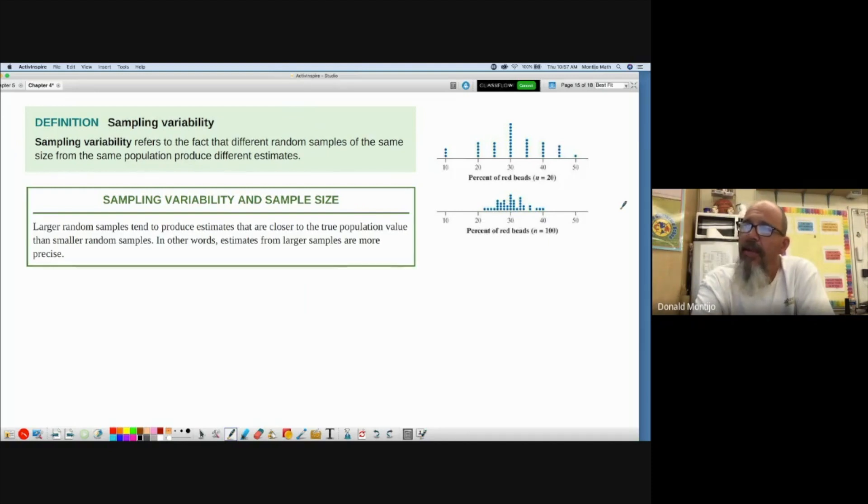Here they put a bunch of beads into a bucket and randomly chose what percent were red. If they took sample sizes of n equals 20, as in this graph up top, you can see the center of this distribution is at 30, and the spread goes from 10 all the way to 50. We had a wide range of percent of red beads when we looked at 20 at a time.